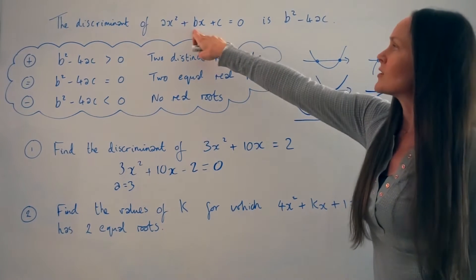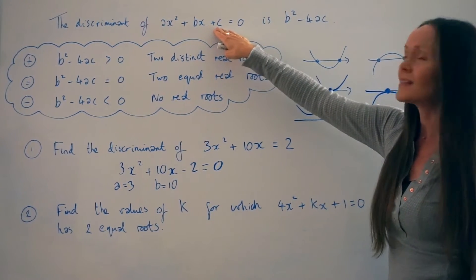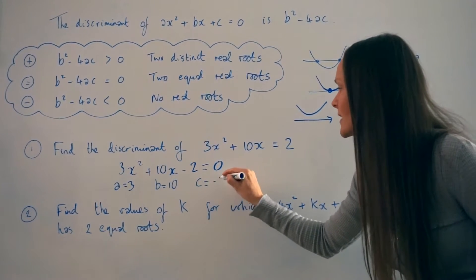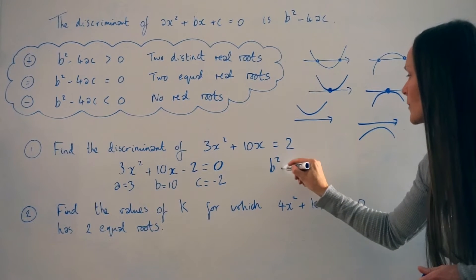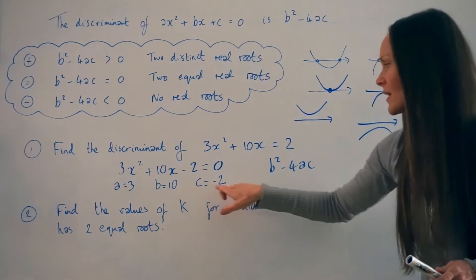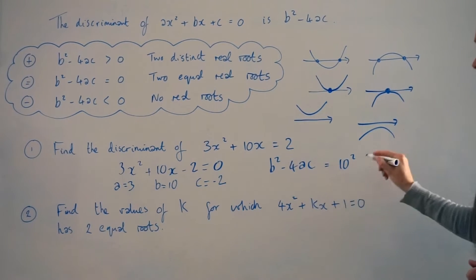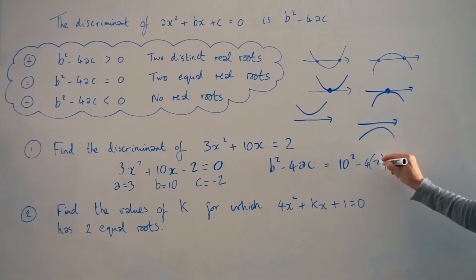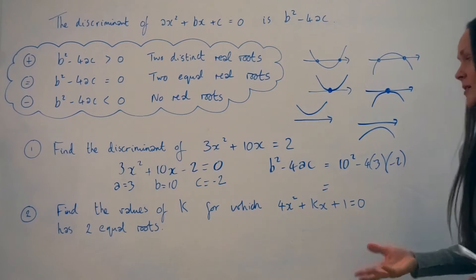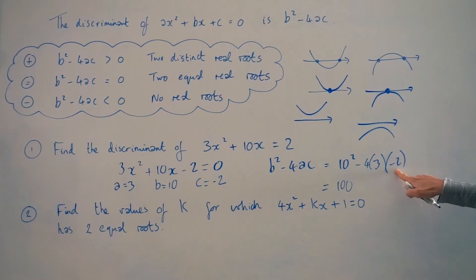b is always the coefficient of x, so here b equals positive 10. The constant — the part without the x — is c, so c equals negative 2. Next, to work out the discriminant we do b squared minus 4ac, replacing a, b and c with those values. So instead of b squared we have 10 squared, then negative 4 times a, which is 3, times c, which is negative 2. Well, 10 squared is 100. Negative 4 times 3 is negative 12, and negative 12 times negative 2 gives positive 24. Adding those together gives 124.